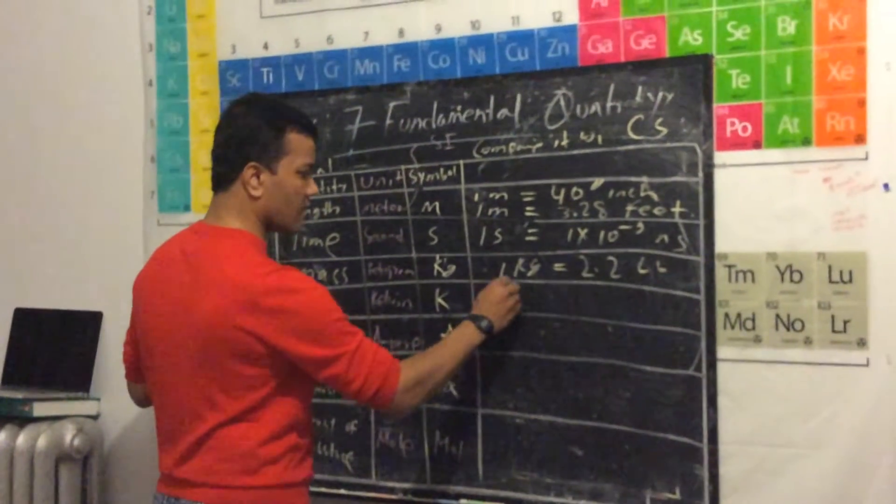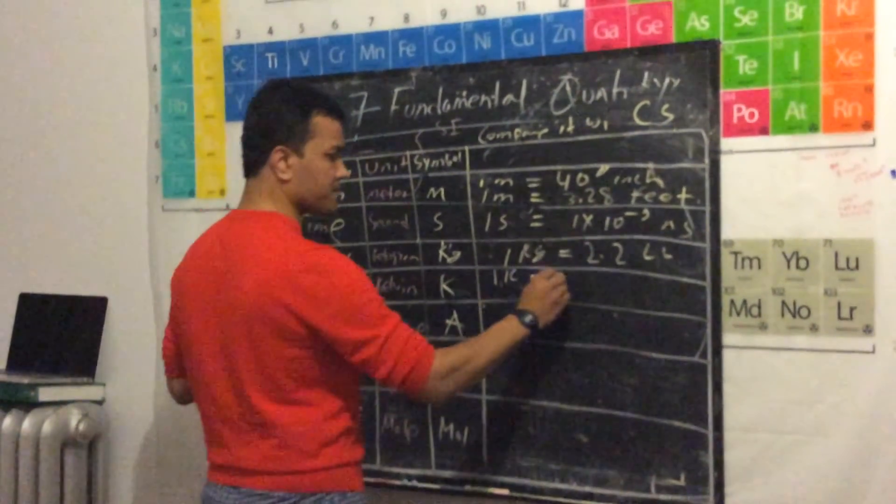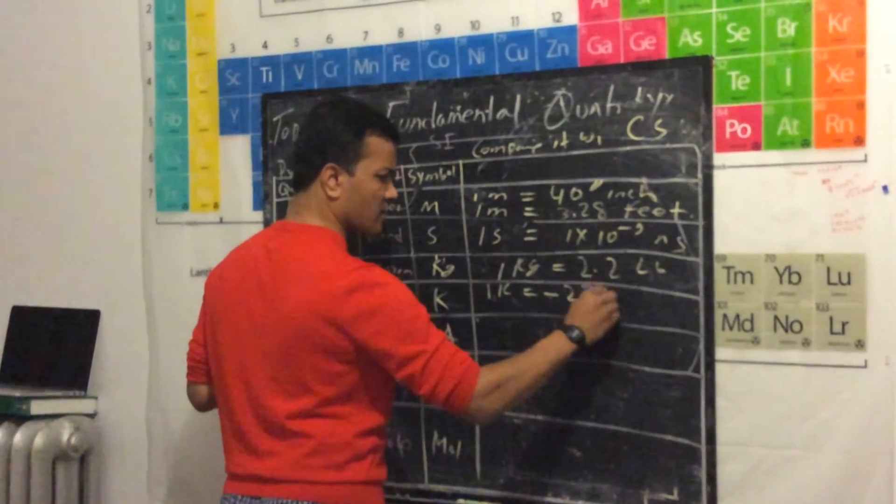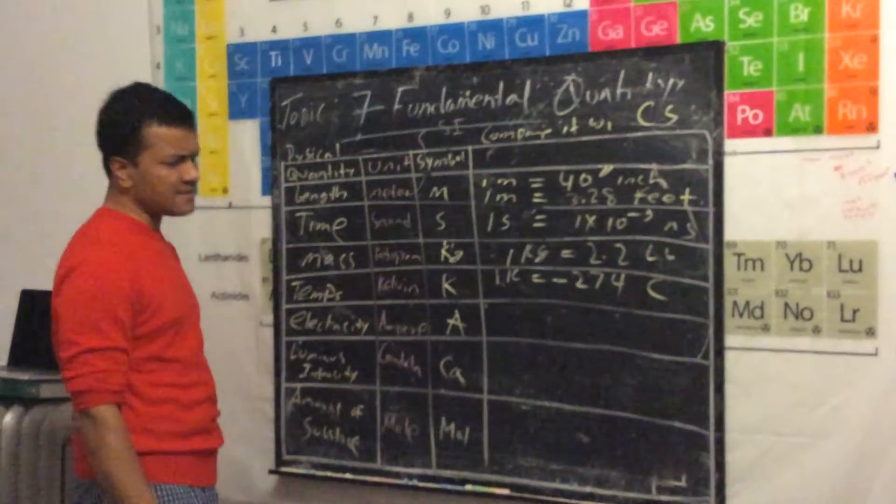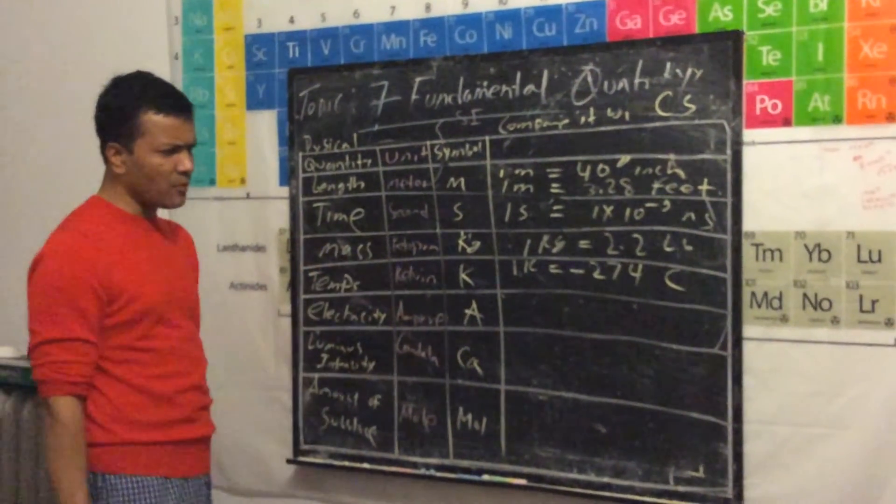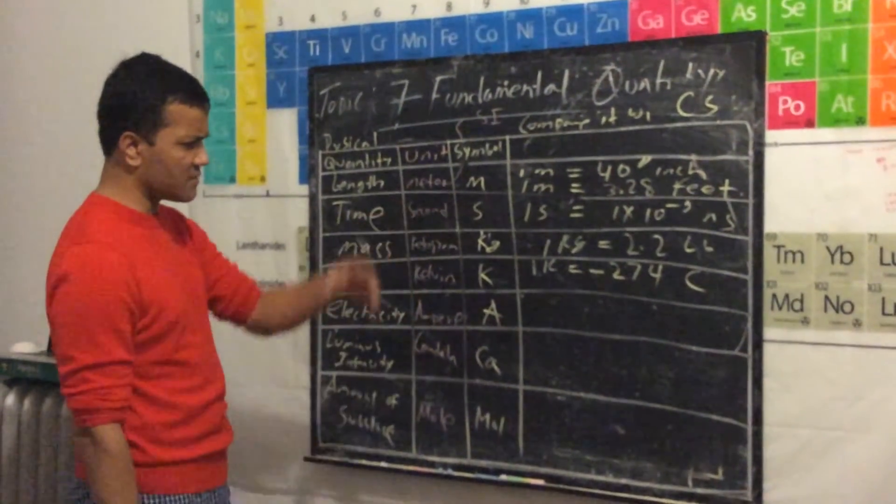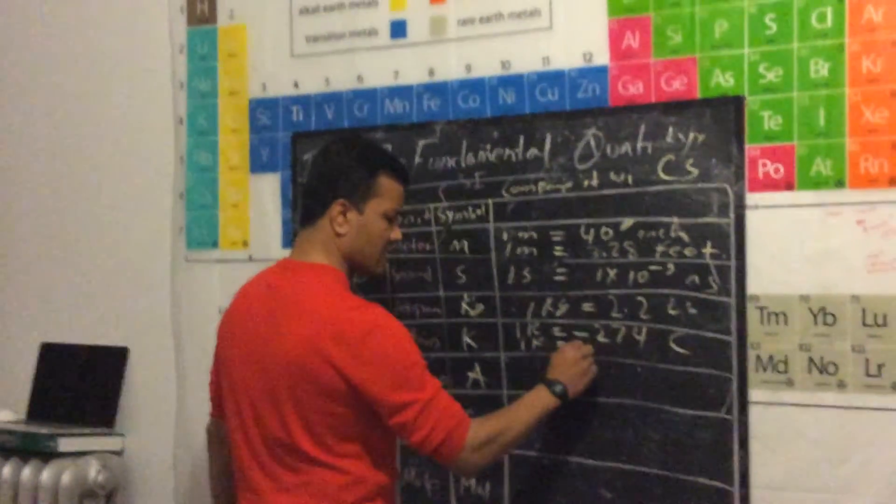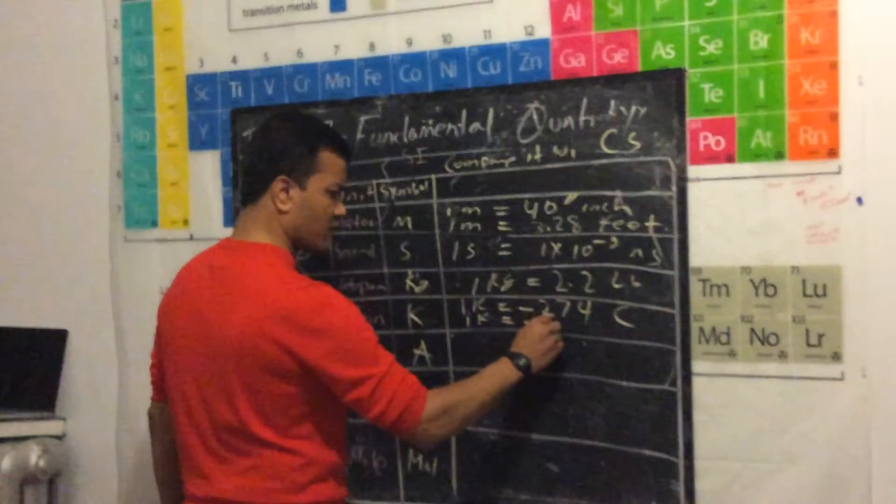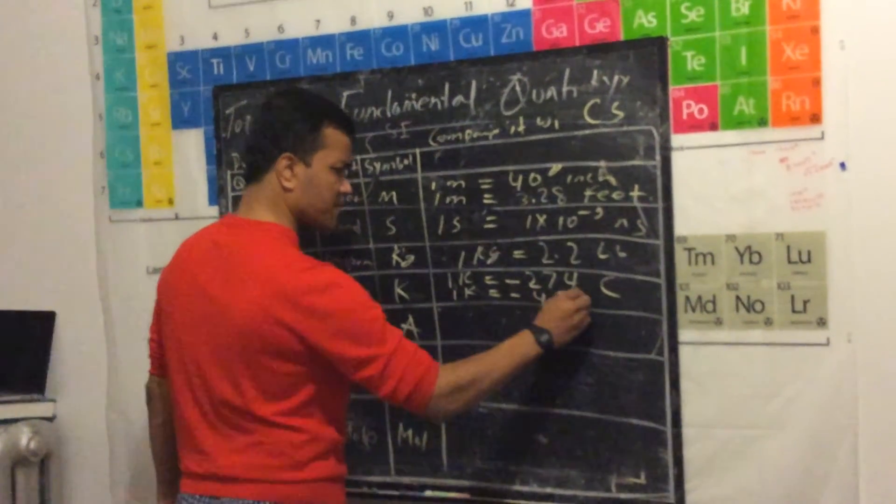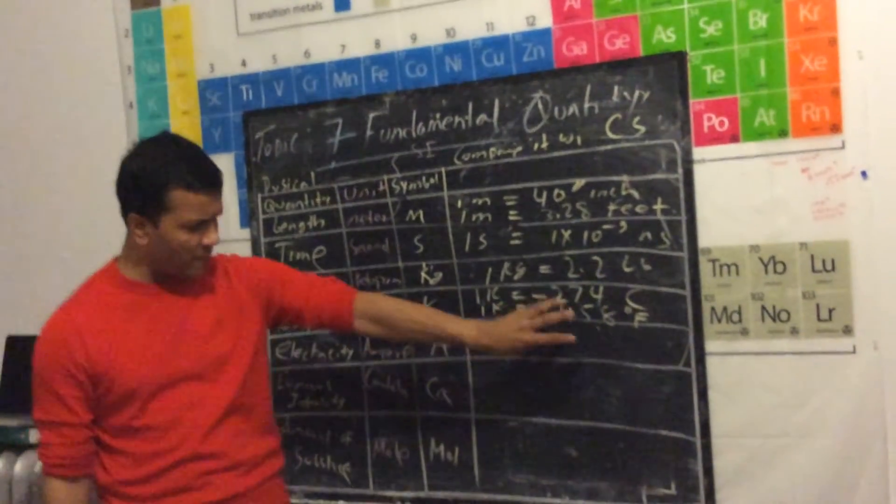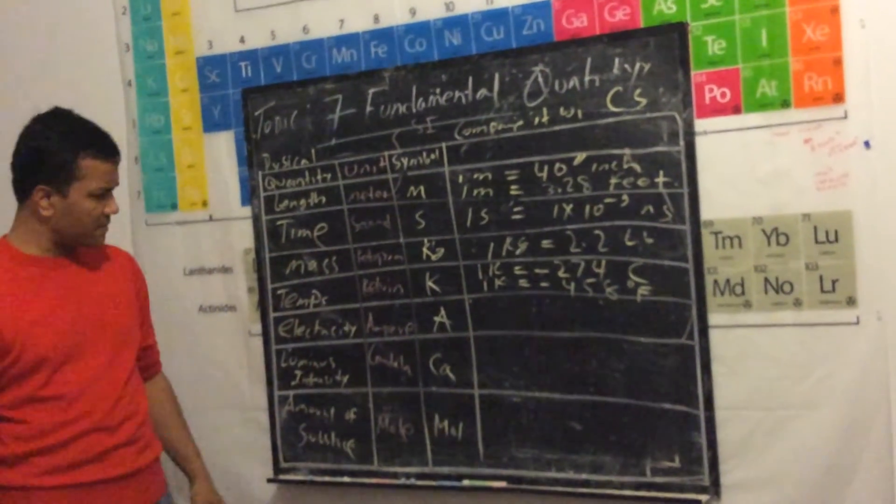Temperature: one Kelvin is about negative 274 Celsius. People in Europe, especially in England, use Celsius. Now here in the United States we use Fahrenheit, that's 458 Fahrenheit. Check in the book, maybe this is off.